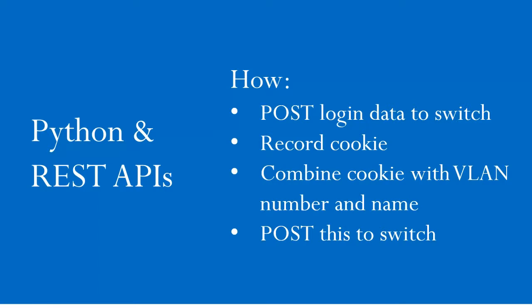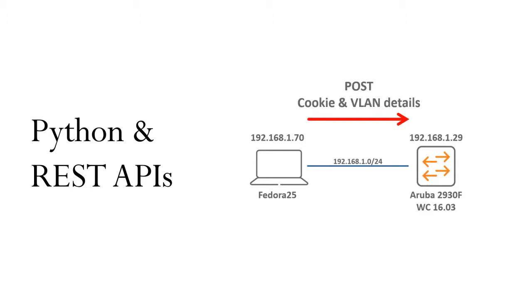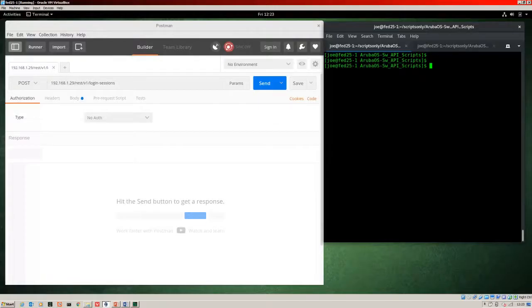To actually configure the switch there are some extra steps in lieu of security. First we need to log into the switch via the REST API — we send a POST to a login-sessions URL, and if the login is successful the response comes back with a cookie. We then combine that cookie with the configuration — the VLAN number and name — and POST this to the switch.